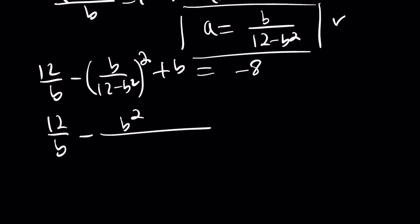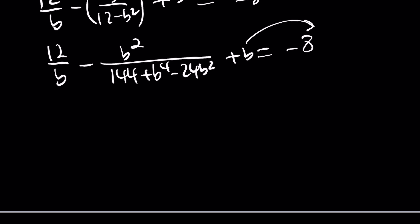Because you're going to square b to the second, which is going to give you b to the fourth. b squared divided by 144 plus b to the fourth minus 24b squared plus b equals negative 8. It's all going to come down to multiply by something to make a common denominator, which is going to give you b to the fifth power.